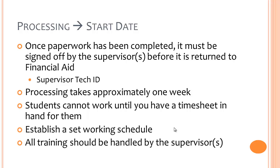On the Work Study Agreement, which is the first page of your packet, there is a section to be completed by the supervisor. It requires your printed name, signature, department, cost center code, MNSCU printer ID number for Eden Prairie supervisors, and supervisor tech ID.